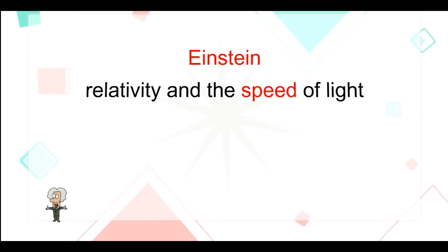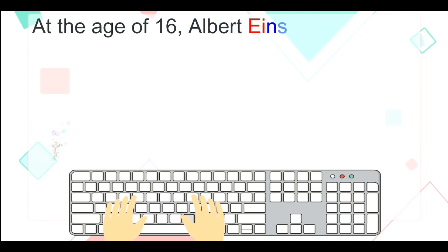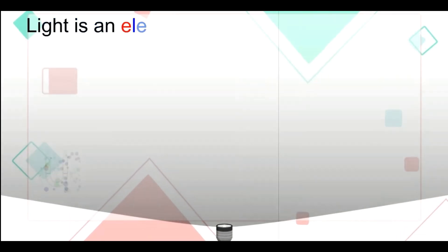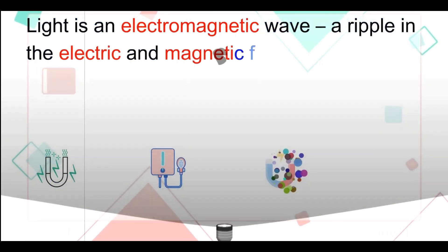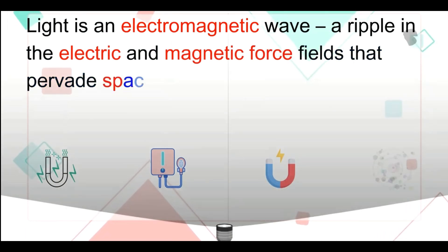Einstein, relativity, and the speed of light. At the age of 16, Albert Einstein imagined riding alongside a light beam. Light is an electromagnetic wave, a ripple in the electric and magnetic force fields that pervade space.